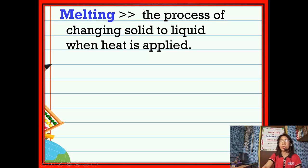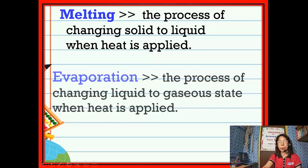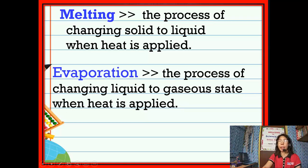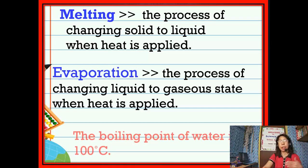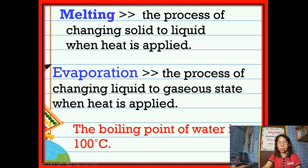Melting is the process of changing solid to liquid when heat is applied. Evaporation is the process of changing from liquid to gas when heat is applied and the liquid reaches the boiling point of 100 degrees Celsius.